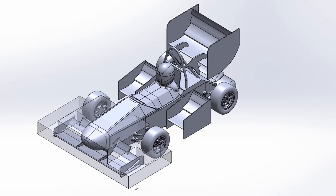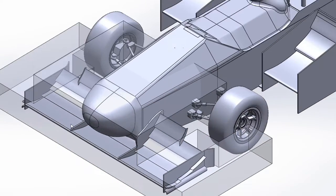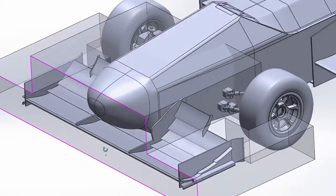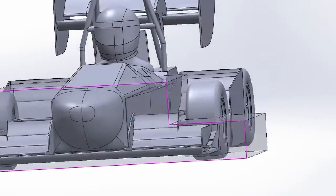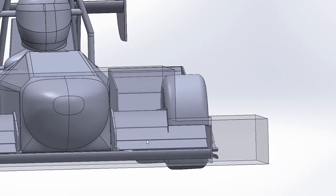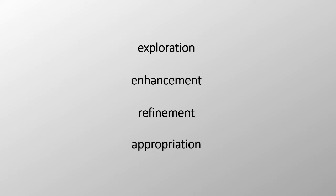Before design could begin, bounding boxes were created to ensure strict adherence to the rules. We can immediately see that Stag6 front wing doesn't completely utilise the space available, therefore missing out on potential aerodynamic gains. The design plan is split up into four operations: exploration of ideas and trying things out, enhancement of ideas and building on exploration, refinement of designs and appropriation of the final design for the use case.